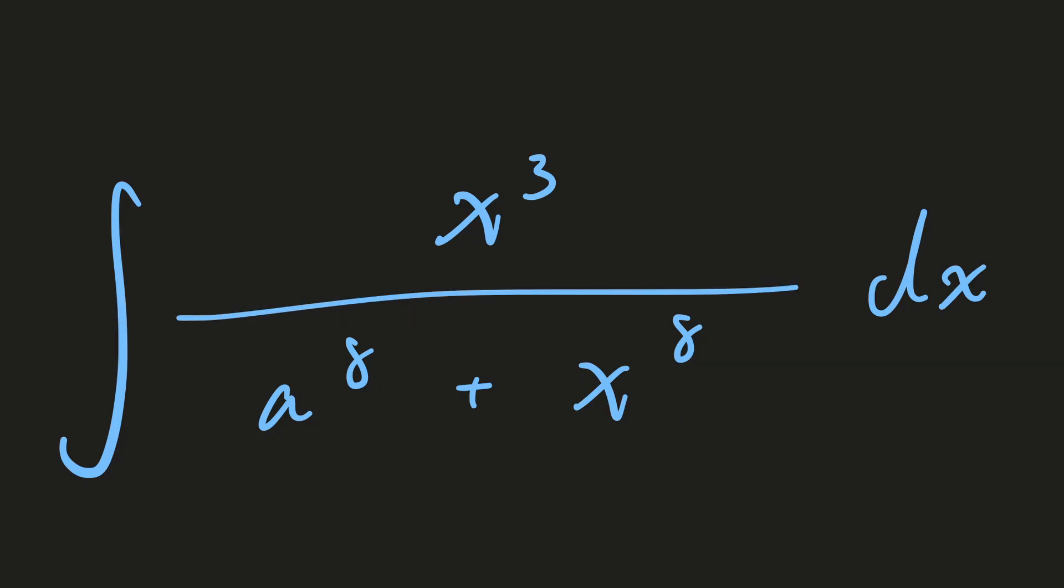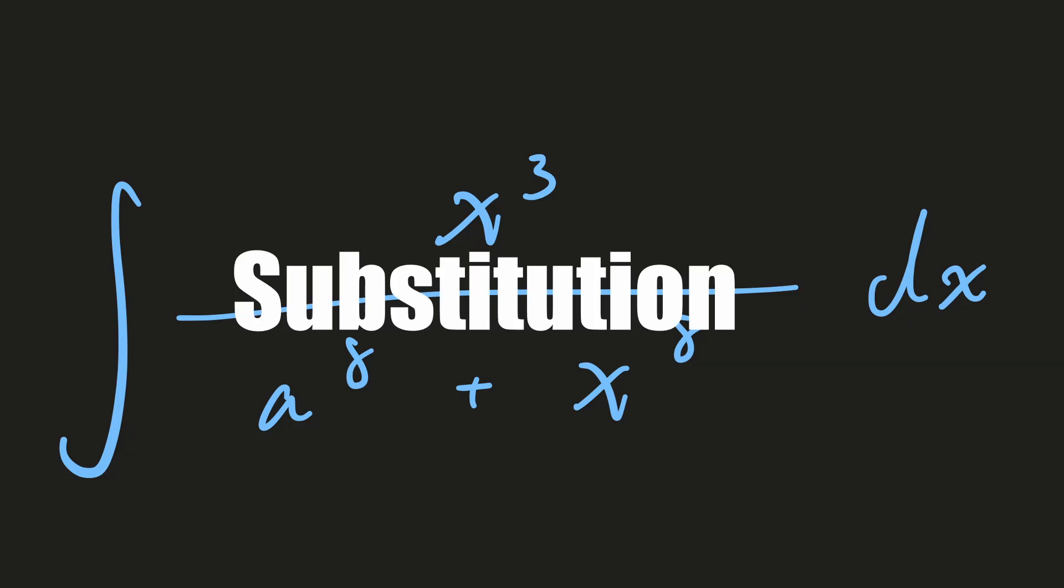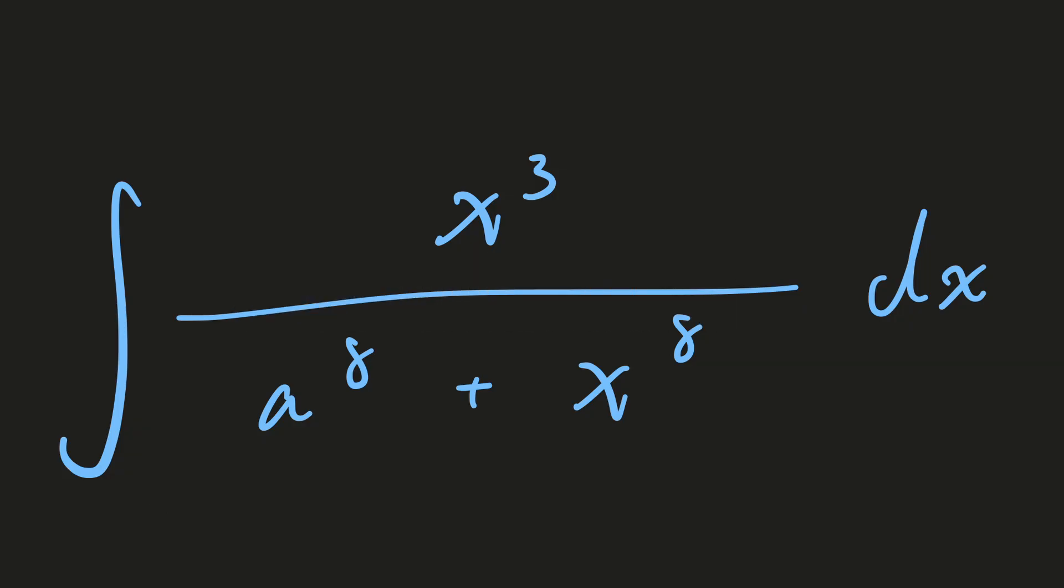That is, if it can be removed by integration by substitution. For example, if we let u is equal to x to the power of 4, we get du is equal to 4x to the power of 3.